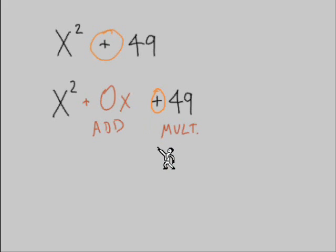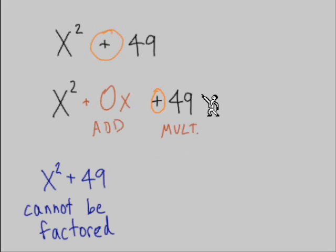But if the product, if multiplied together equals a positive, then the numbers are either both positive or both negative. And either way, they're not going to add up to equal 0.